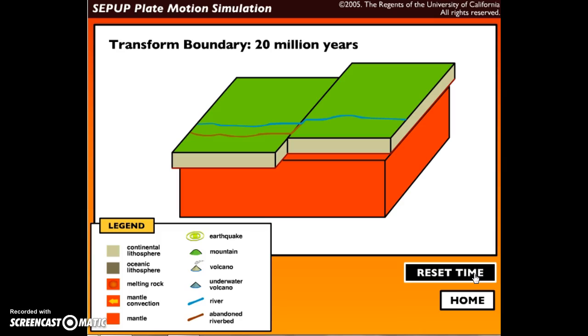All right, so those are the geologic features and events for the transform fault boundary where the two plates grind past each other. So please make sure you've completed all of your notes, and if you want to check your work, just replay the video. Thank you.